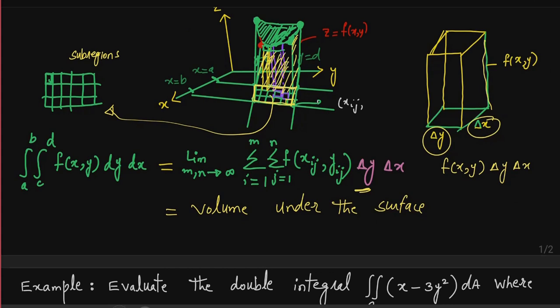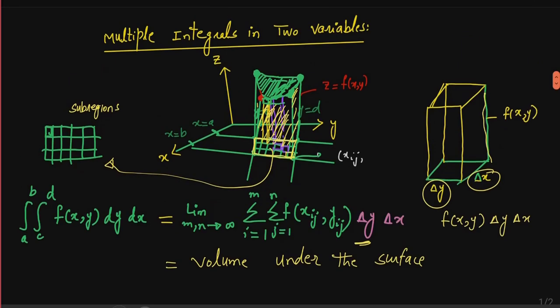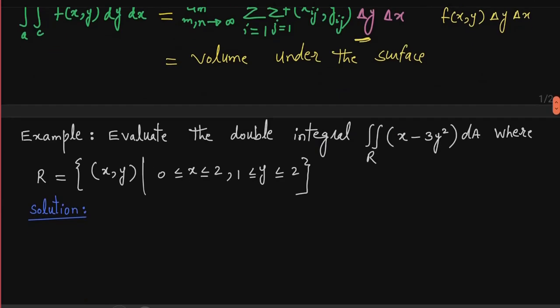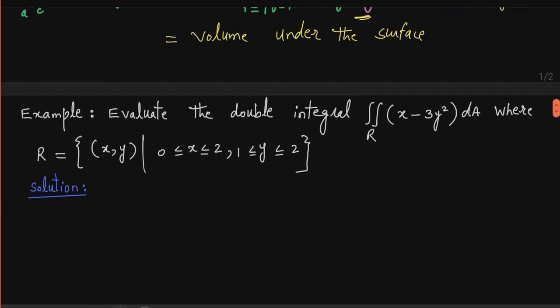Double integrals کے ذریعے ہم یہ تمام volume نکالنا چاہ رہے ہیں۔ یہ proof as such نہیں کیا لیکن آپ دیکھ رہے ہیں کہ summation کے ذریعے تمام volumes add کر کے ہم integrals بناتے ہیں۔ اب ہم example کی طرف چلتے ہیں۔